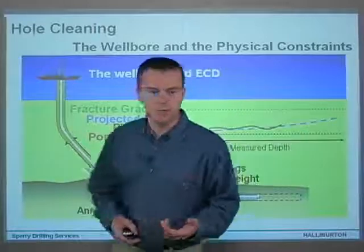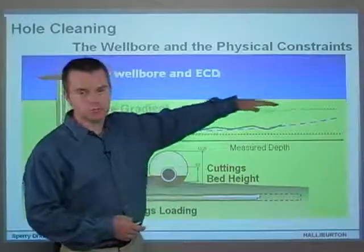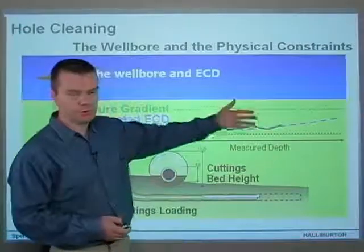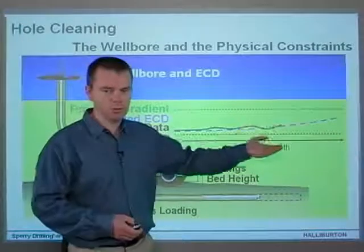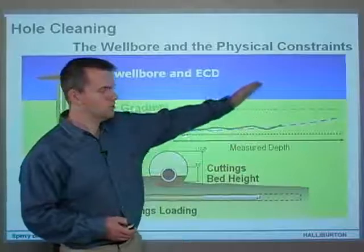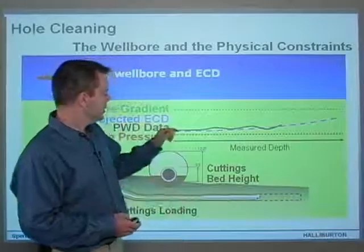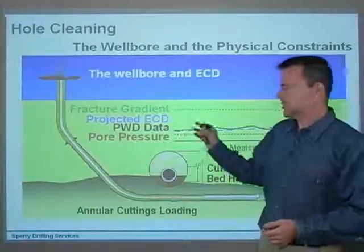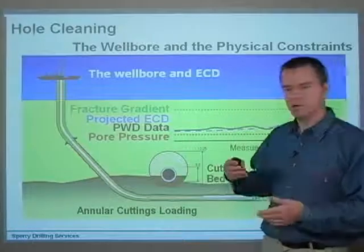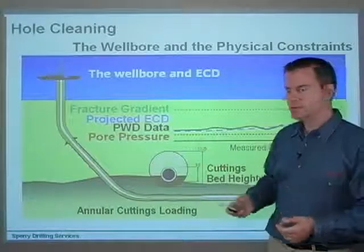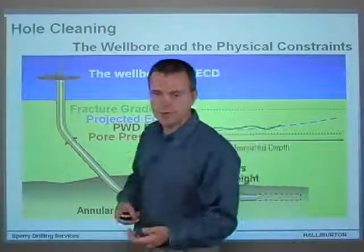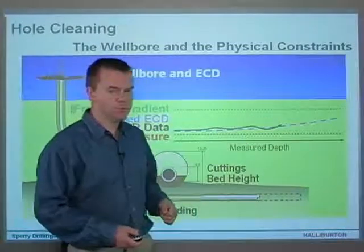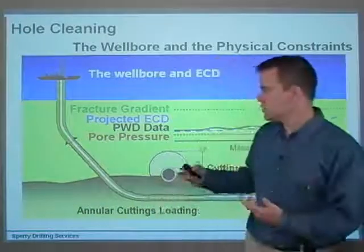The constraints on this wellbore are: the upper constraint is the fracture gradient or rock strength, and the lower constraint is pore pressure — if your hydrostatic or circulating density comes below pore pressure, you'll take a kick; if it goes above the fracture gradient, you break down the rock. We've got a blue dashed line showing projected ECD from the hydraulics model, and then real-time PWD data. You compare the PWD data with the model and work out what's happening downhole as it varies.